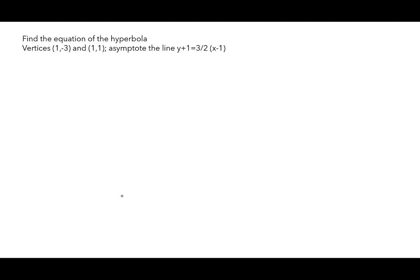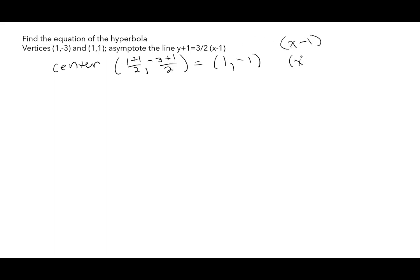For the next problem, I have some information and want to build the equation of a hyperbola. Vertices at (1, -3) and (1, 1), with asymptote y + 1 = (3/2)(x - 1). Start with the center — one way is to find the midpoint: (1+1)/2 = 1, (-3+1)/2 = -1. So the center is (1, -1), which also appears directly in the asymptote equation as x - 1 and y + 1.